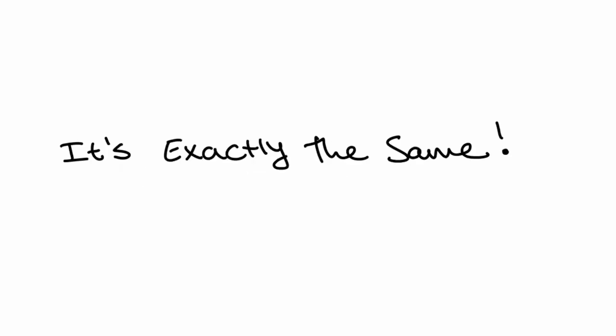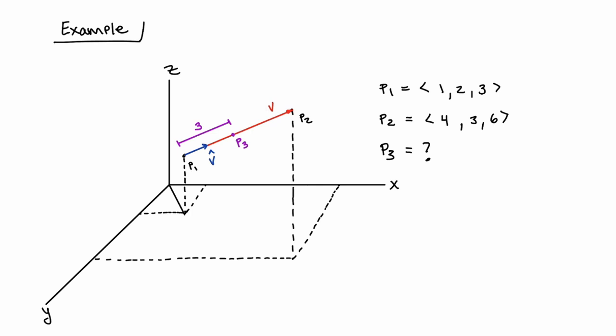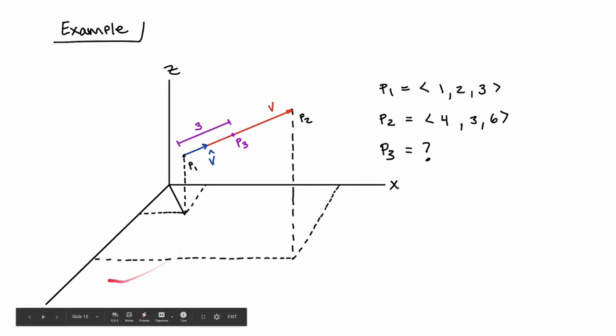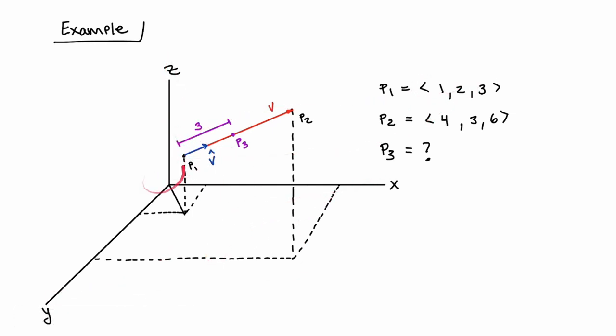Take a moment and mentally prepare yourself, because we're going to make the jump from 2D to 3D. Here's the kicker — it's exactly the same. Nothing changes; it's so easy to make the transition. All our points now have three coordinates instead of just X and Y — we have a third coordinate, Z.